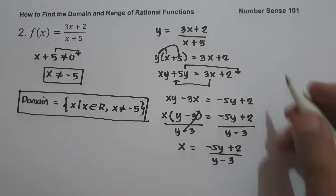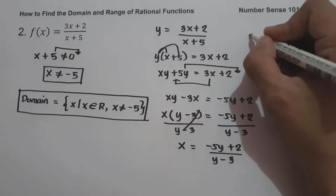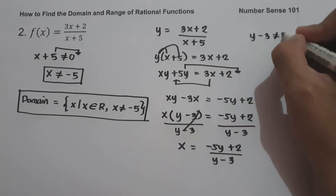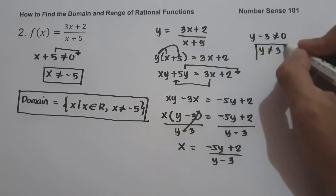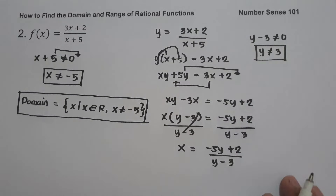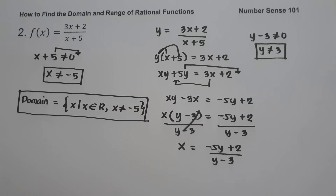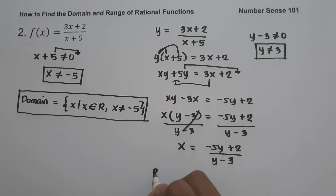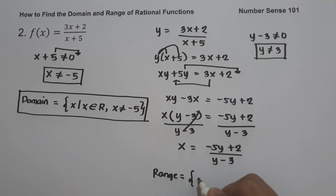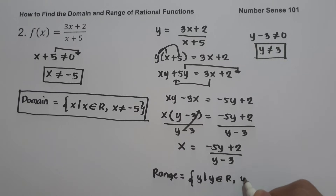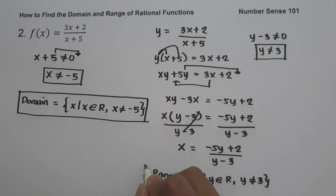To find the range, equate the denominator not equal to 0: y - 3 ≠ 0, so y is not equal to 3. Substituting gives undefined. So the range of f(x) is the set of all real numbers except 3. In set builder notation: range is the set of values of y such that y is the set of all real numbers except 3.